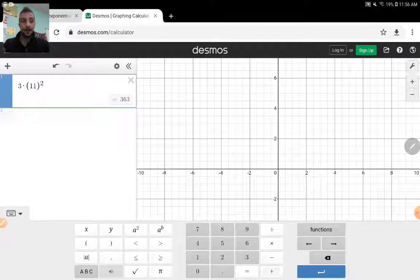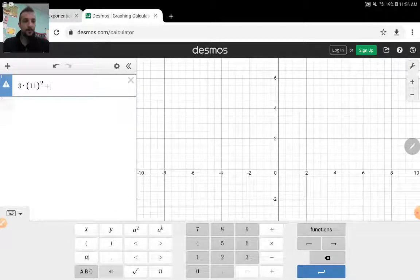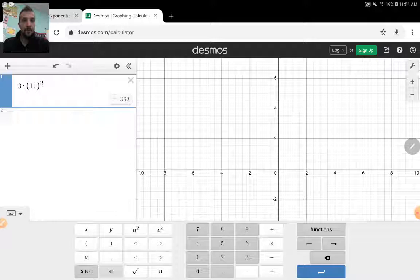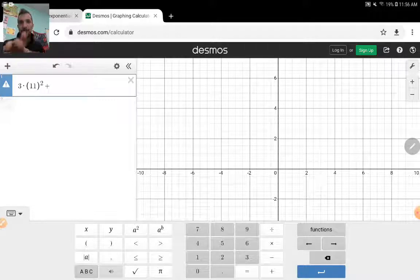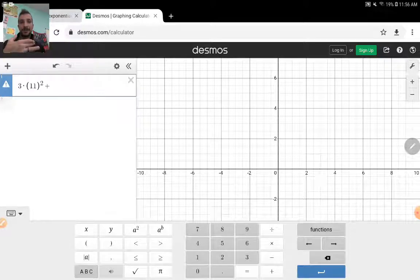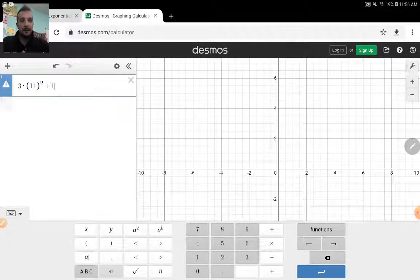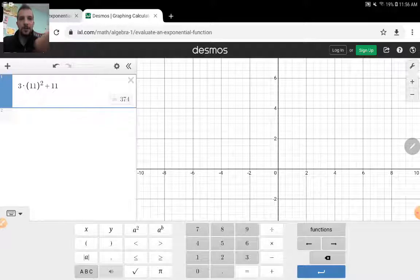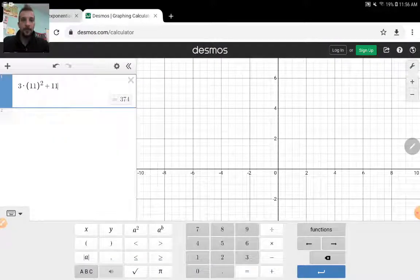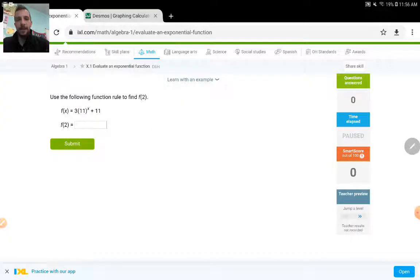Here is a common mistake that about half of you is going to make at one point. You got to pay attention to where you're typing what you're typing. You don't want to put this plus right next to that 2. If you have a plus in the power that's going to change your answer. Make sure it's not right next to 2 and then I'll add 11. So 374, that was what I ended up with, so I can now type my answer in and then move on.